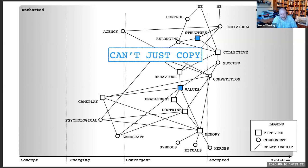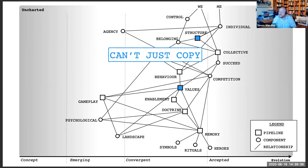The second thing is you can't just copy values and structure and magically expect your culture to be the same. You read books about going from good to great with your top ten values — if you just implement them you'll create a wonderful culture. It won't work because there are so many other components involved. You can't look at Spotify and say 'we'll copy their structure and values and we'll be like Spotify.'